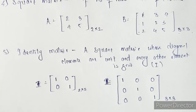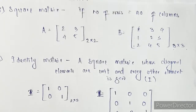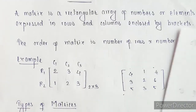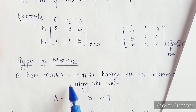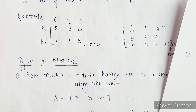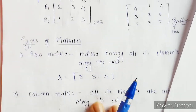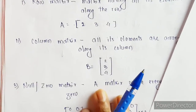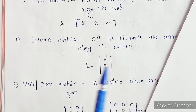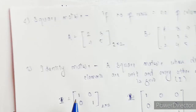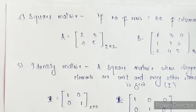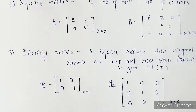So we have studied a total of five types of matrices: the first was row matrix, then column matrix, null or zero matrix, square matrix, and identity matrix.